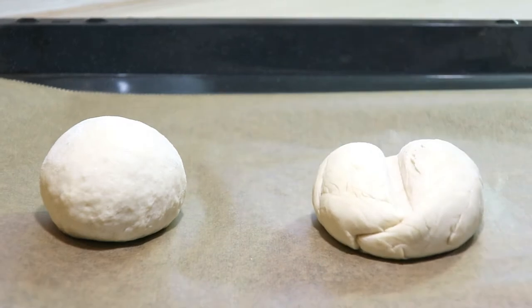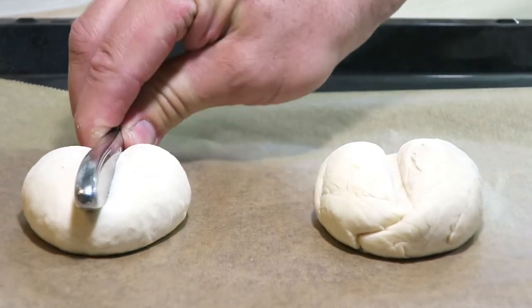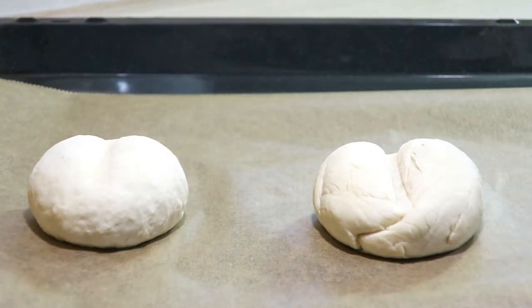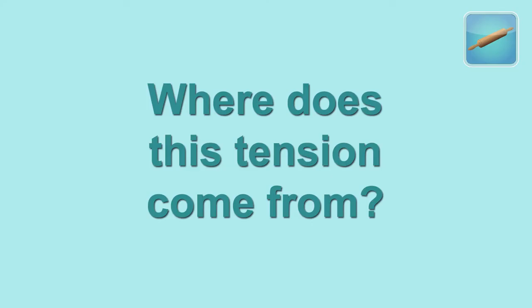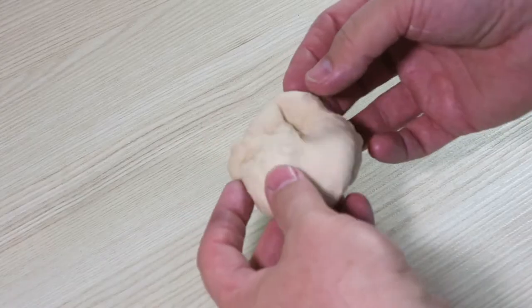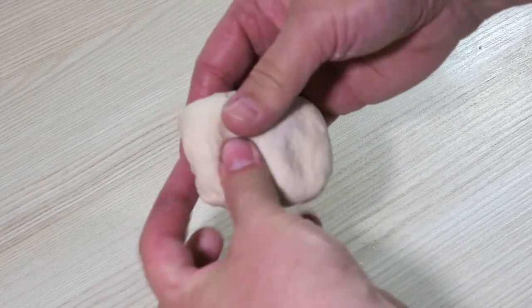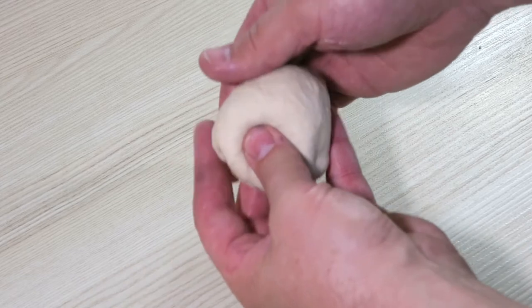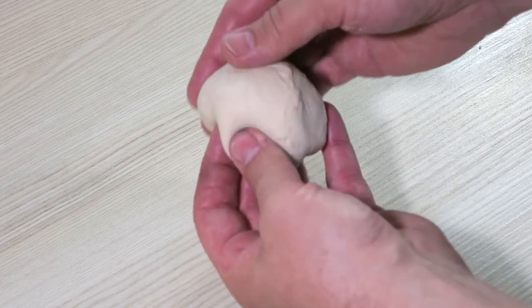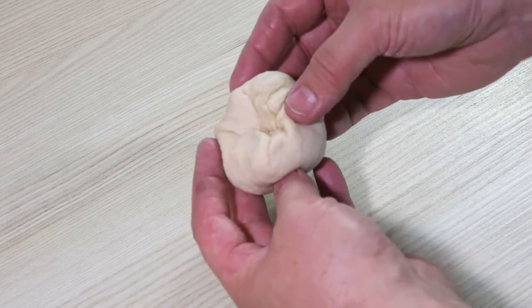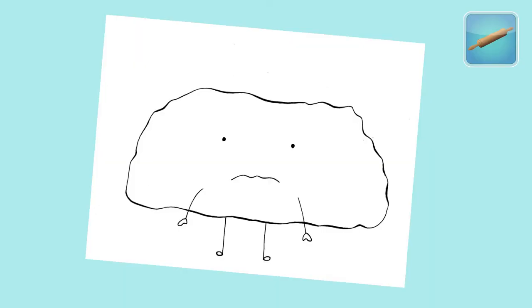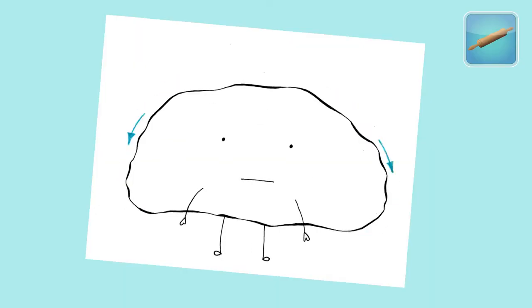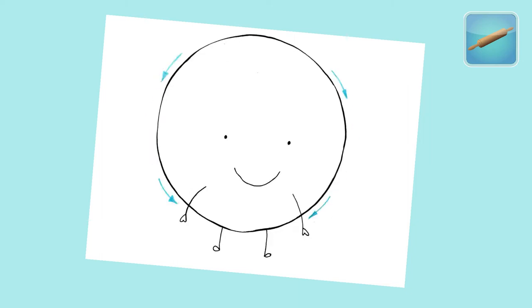The rounding gives the dough pieces tension and this tension holds the rolls together while baking. When rounding, the outer dough is pulled downwards. This stretched outer layer then embraces the dough like a rubber band. The dough moves into the base of the dough piece. By pushing the dough into the bottom, the inside of the dough piece moves to the outside.